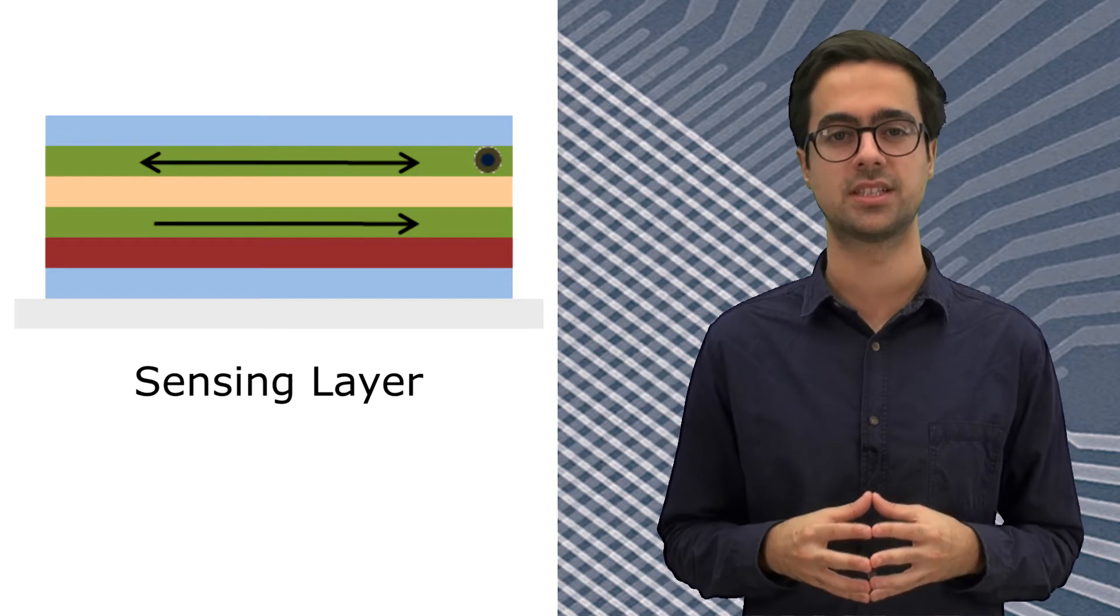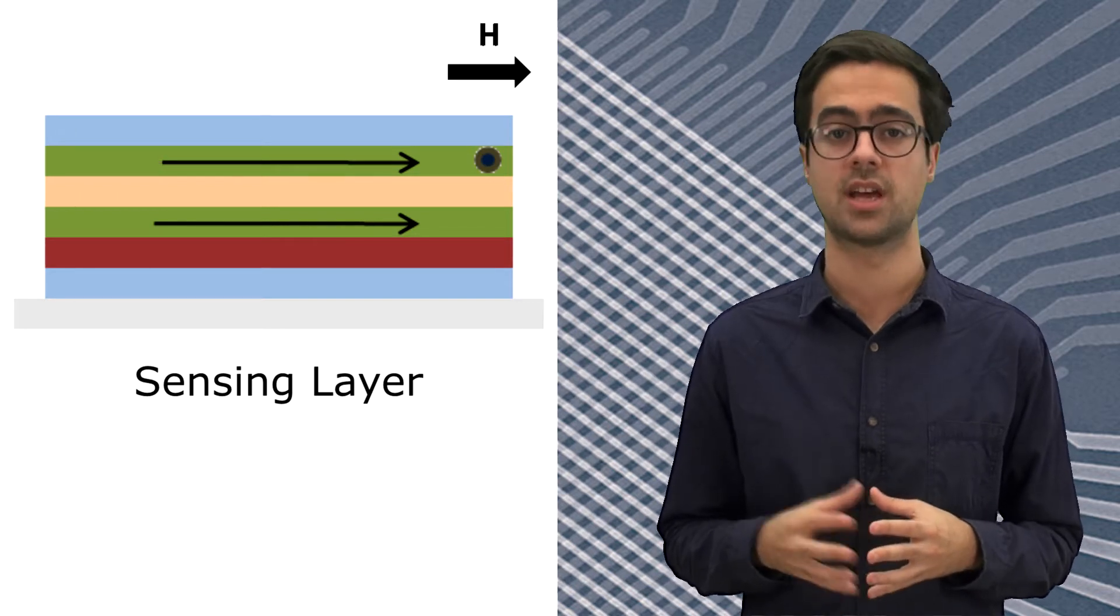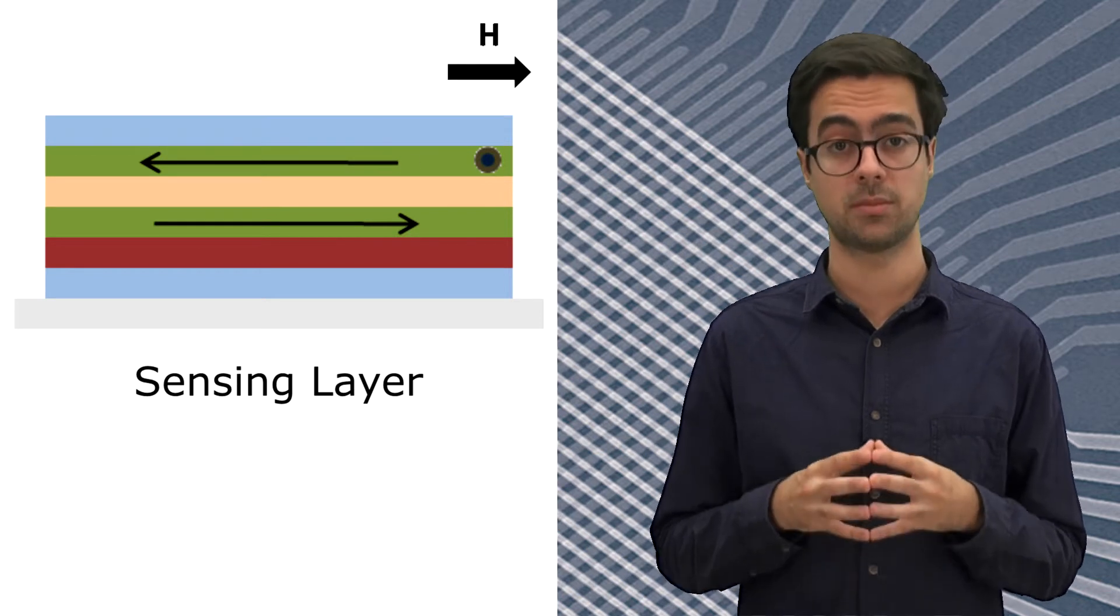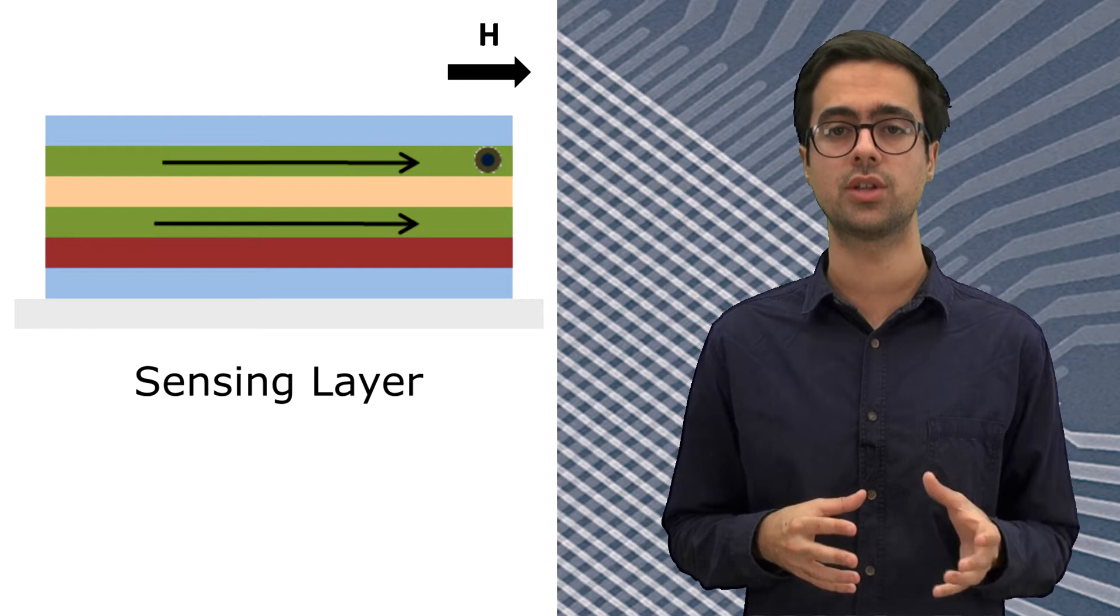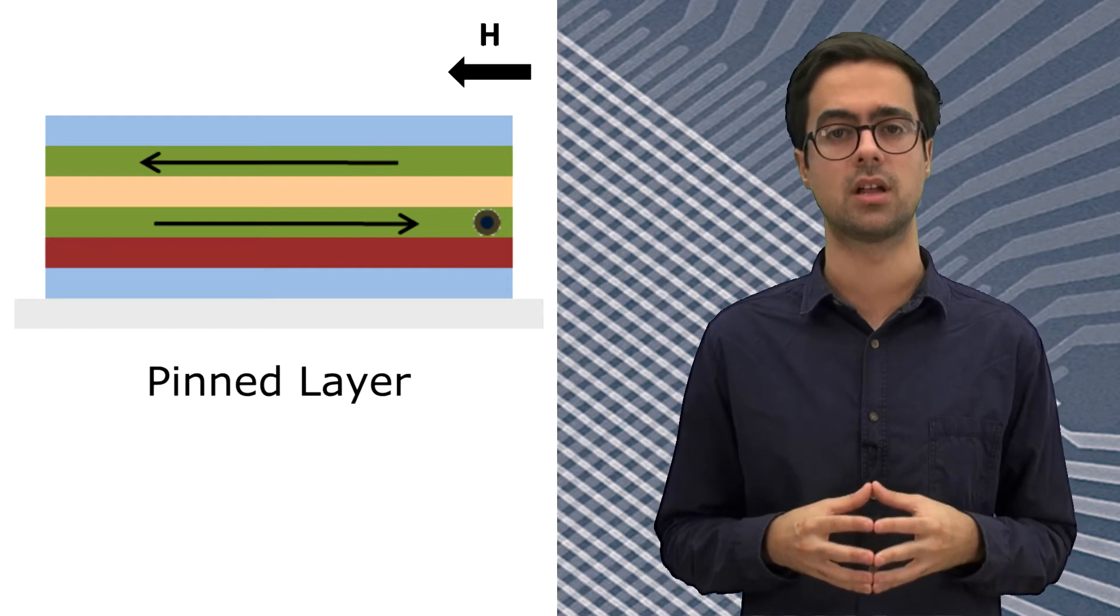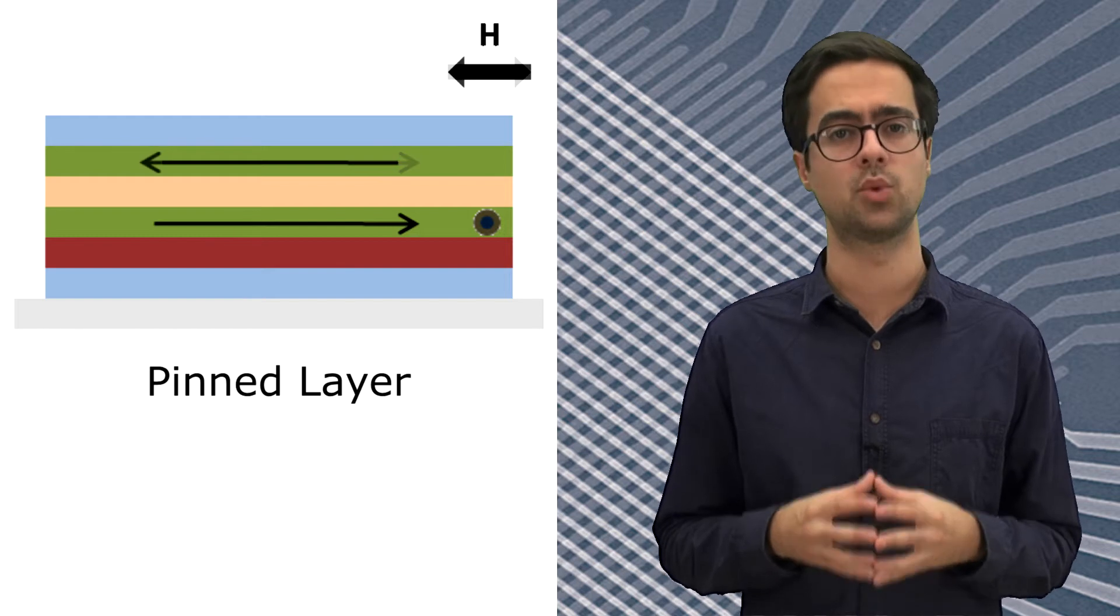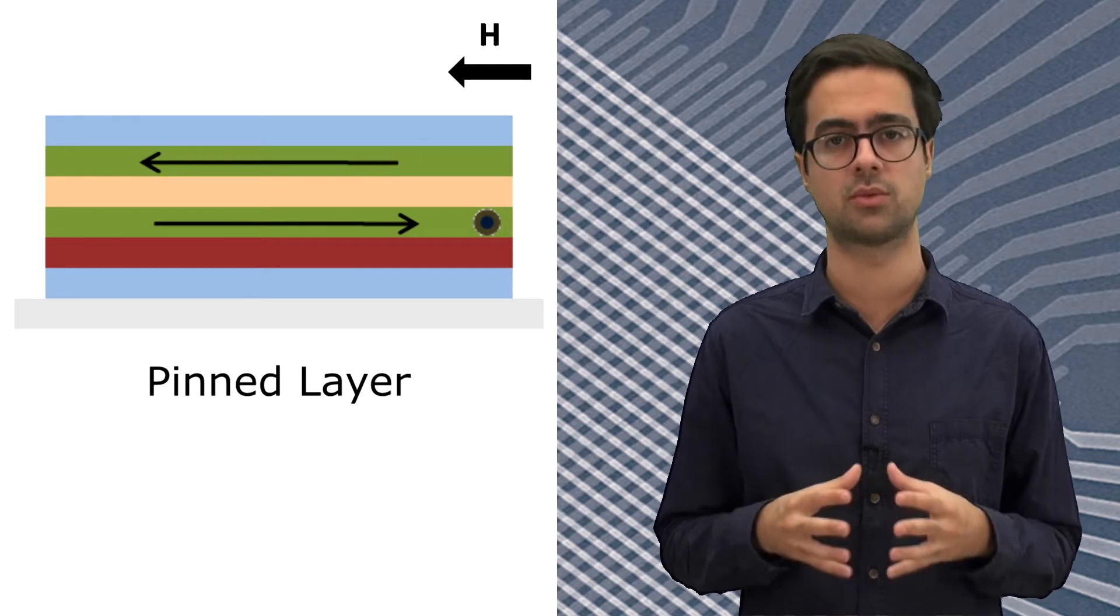The sensing layer is a ferromagnetic material such as iron cobalt alloy which has a magnetization that rotates according to the magnetic field applied. On the other hand, the reference layer, also called pinned layer, is again a ferromagnetic material but this time with a fixed magnetization that does not react to the field.